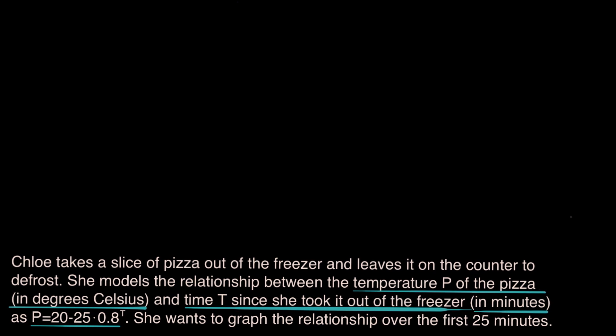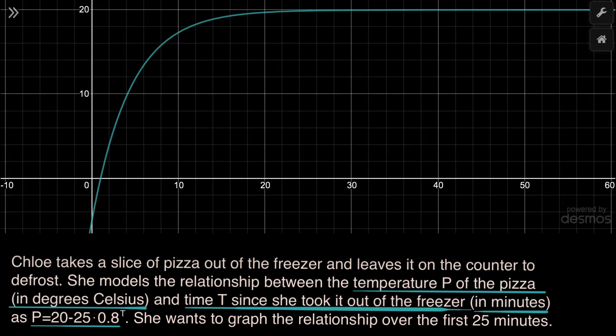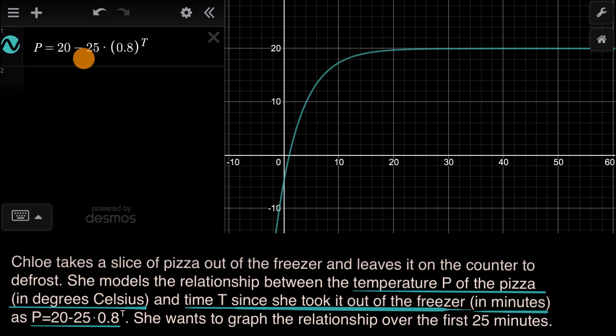But I want to look at the graph in the context of what we are trying to model and carefully think about what should be the labels for the axes, what parts of the graph are interesting. So this is this function graphed on Desmos. You can see I typed it in right over here: P equals 20 minus 25 times 0.8 to the T power, exactly what we had.